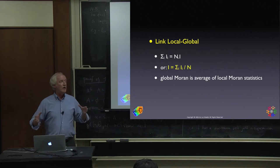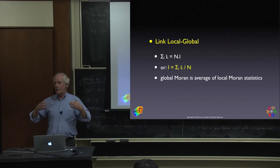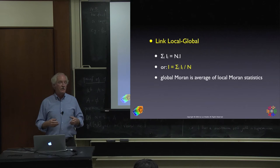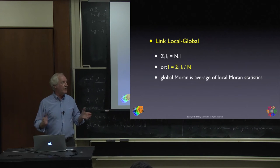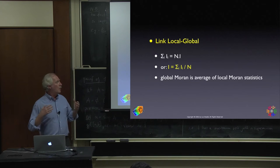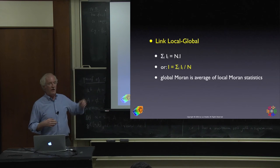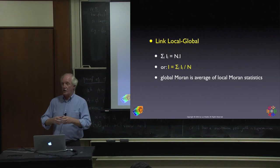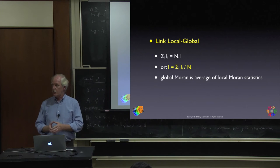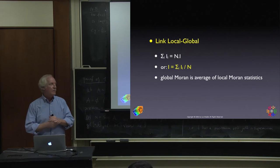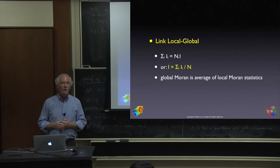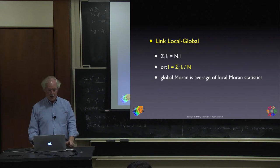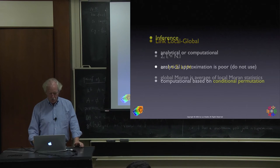You can look at how this average is constructed. Means are very sensitive to outliers — that's why robust analysis uses medians instead. How do outliers affect this averaging, which is your global spatial autocorrelation statistic? But what we're really interested in is whether these local statistics are significant or not.